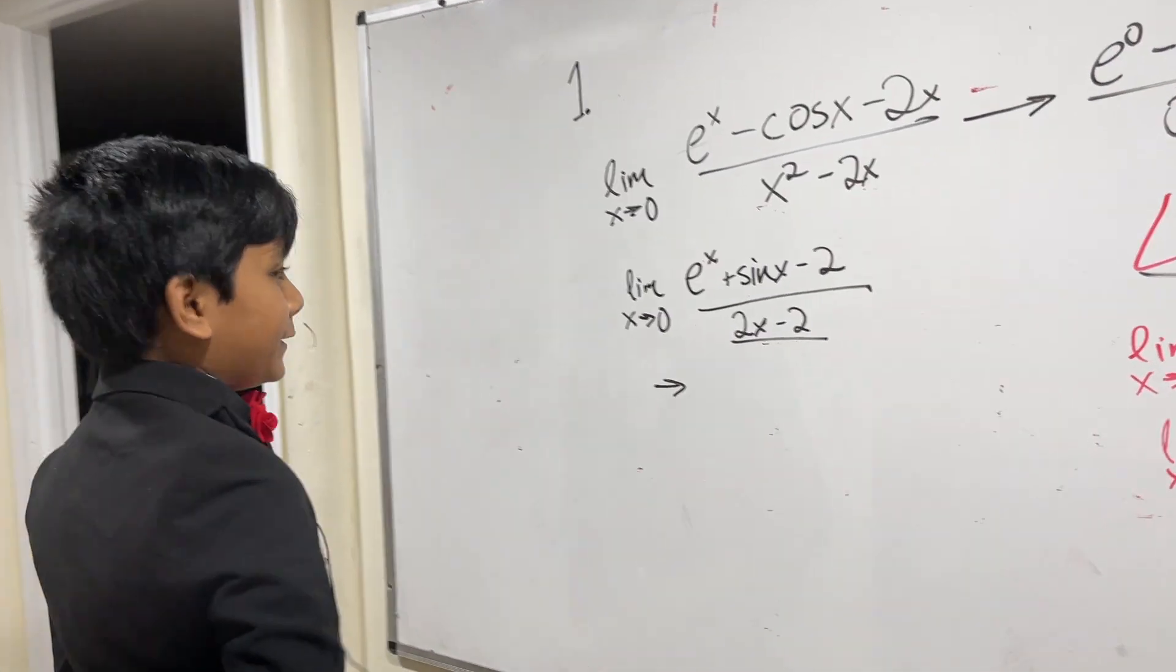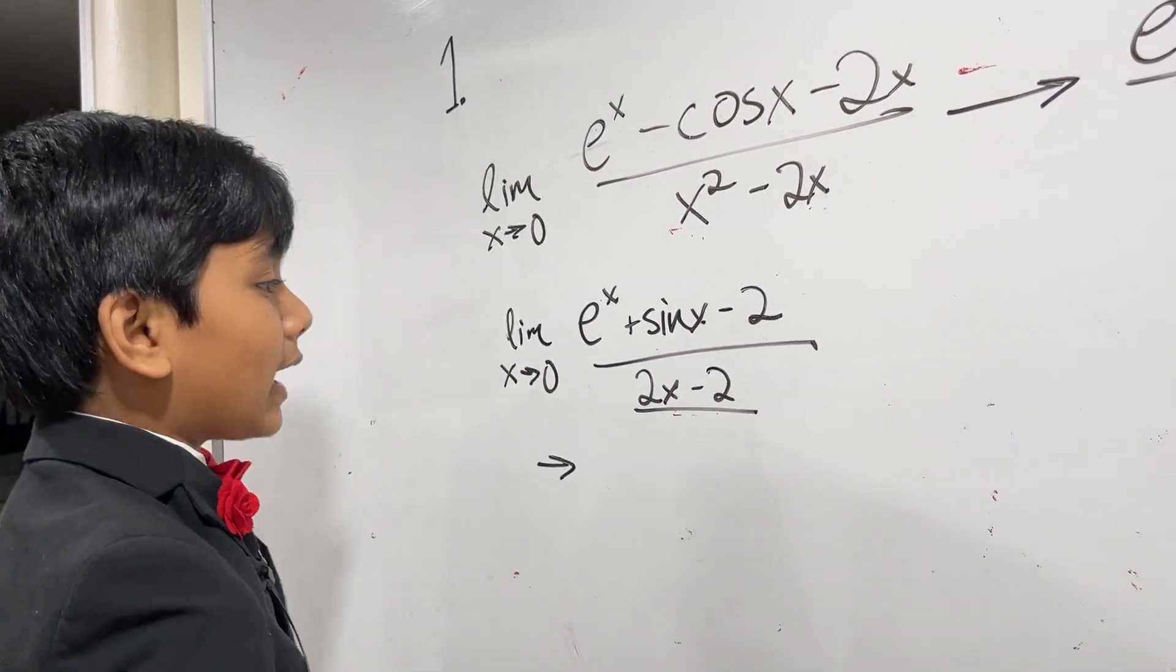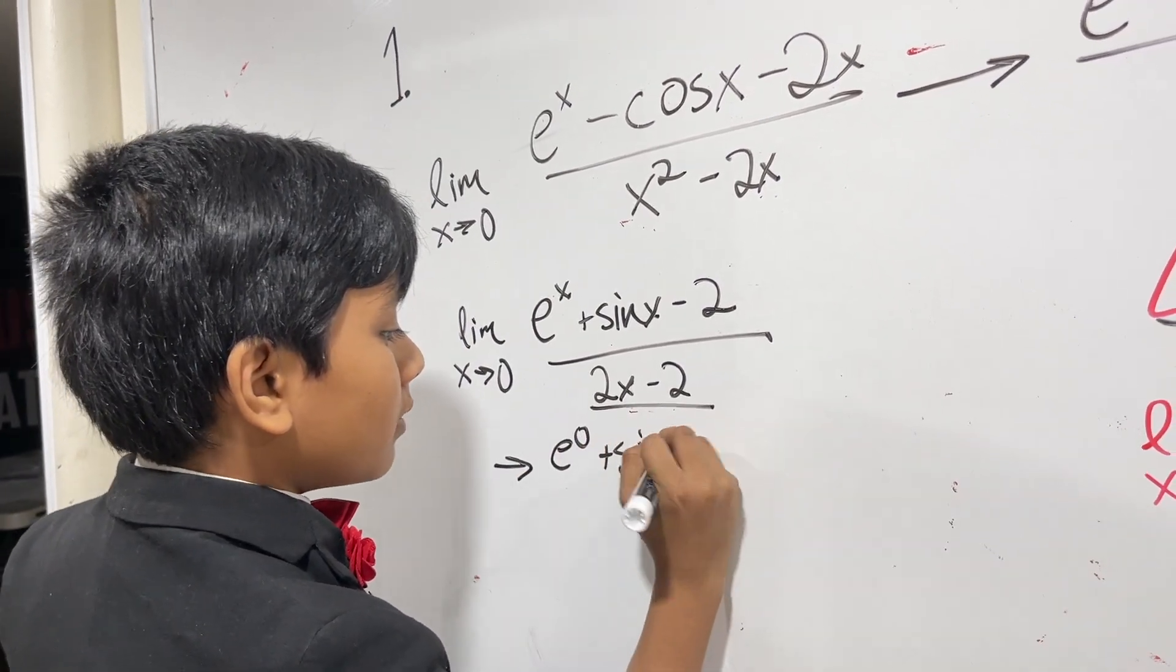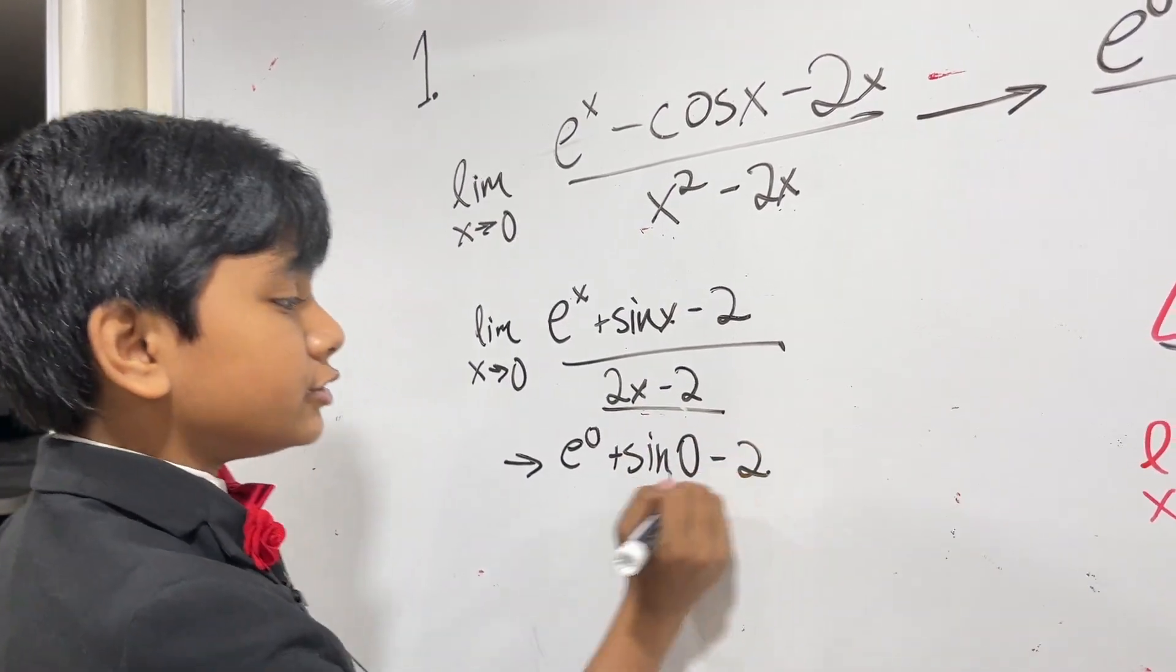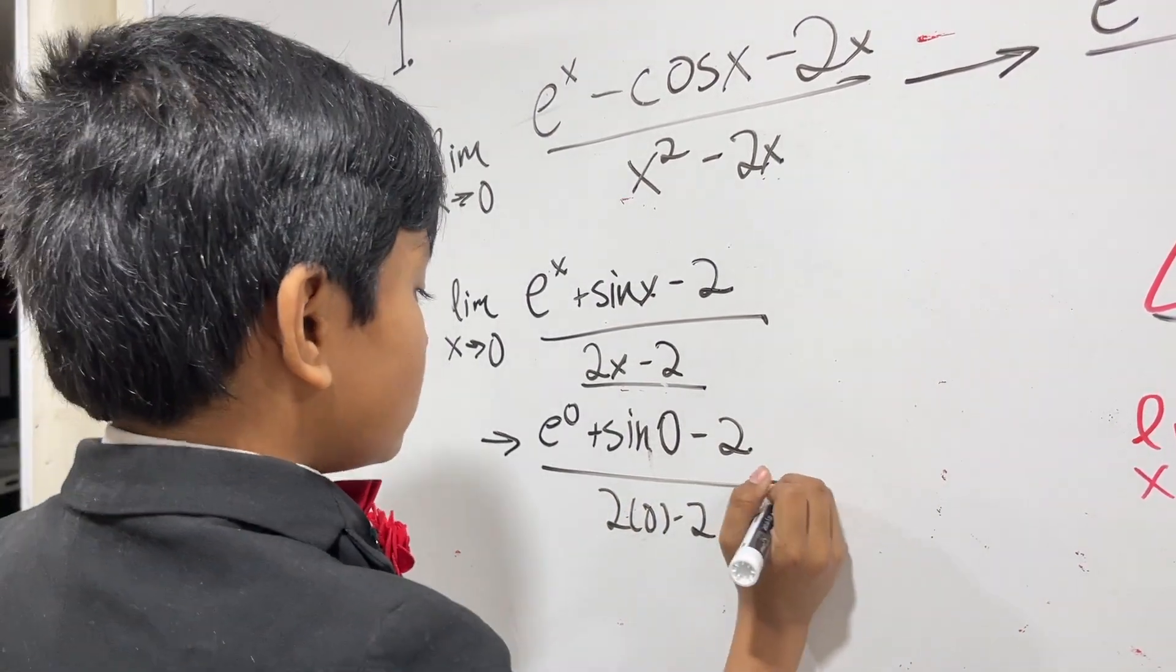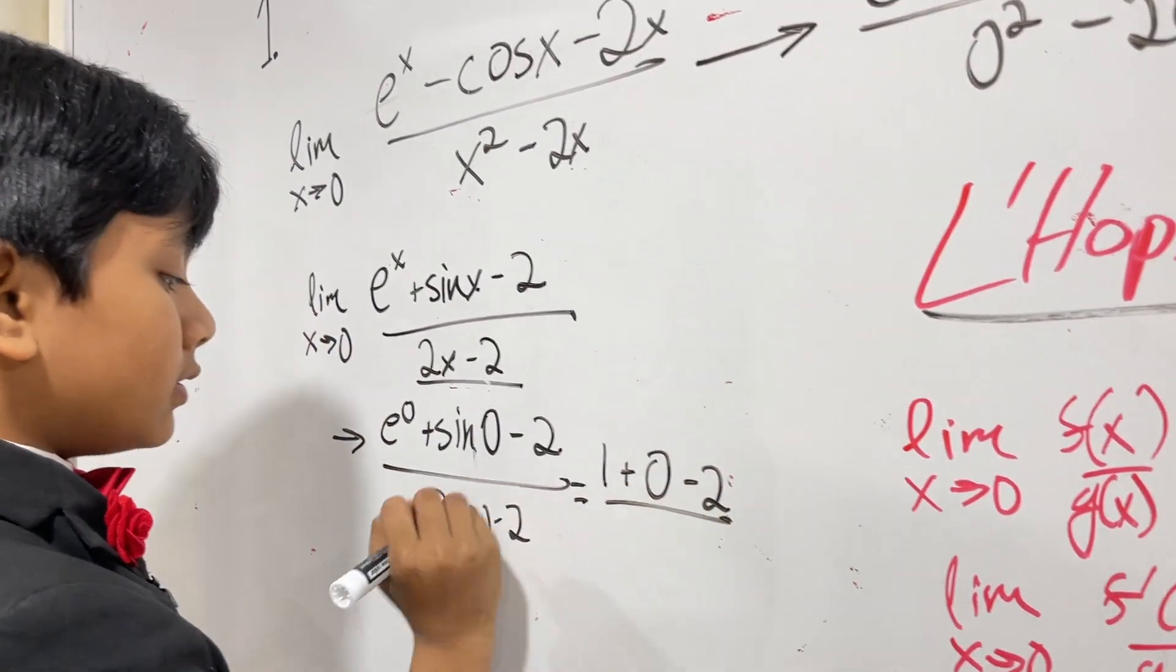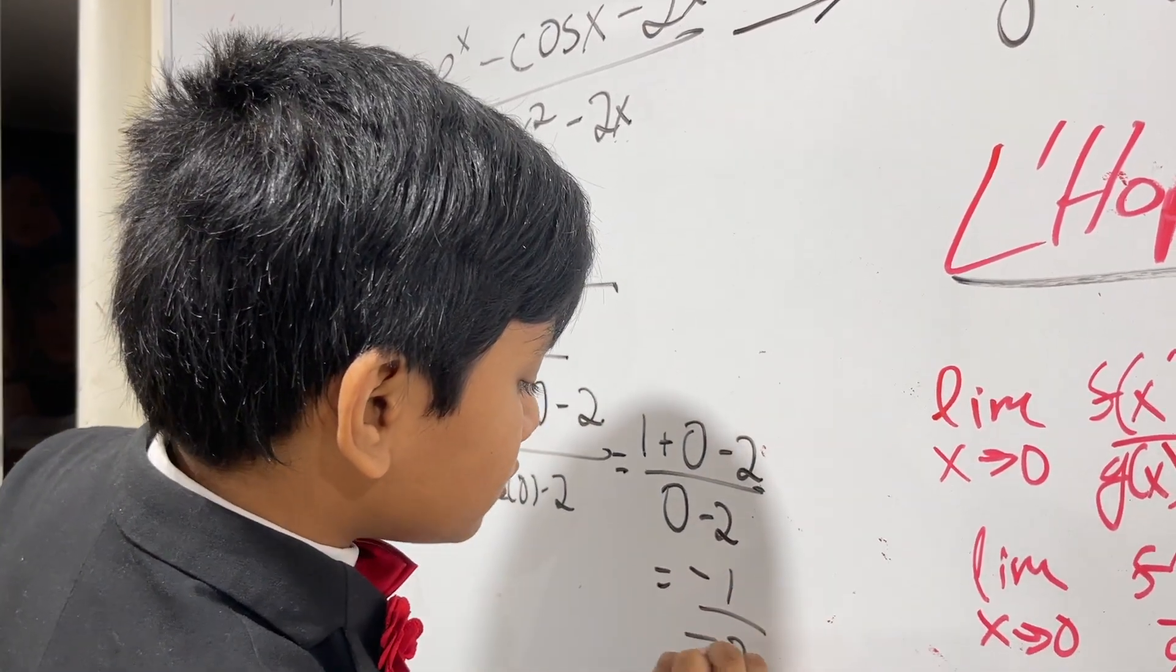Alright, so now let's see what happens when we just plug and chug. We get e^0 plus sine of 0 minus 2 over 2 times 0 minus 2. So that's just e^0 is 1, sine of 0 is 0, minus 2 over 0 minus 2, so we just get minus 1 over minus 2 or one half. That's it.